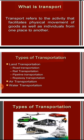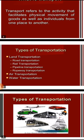Land means road, rail, pipeline, and ropeway. These are the main subtypes. The three main types are land, air, and water.